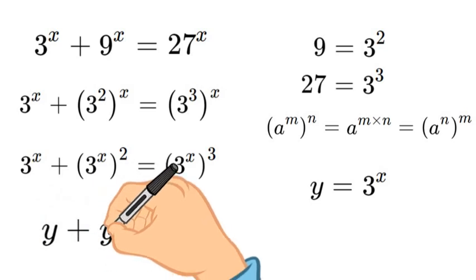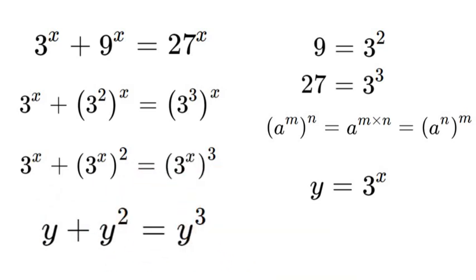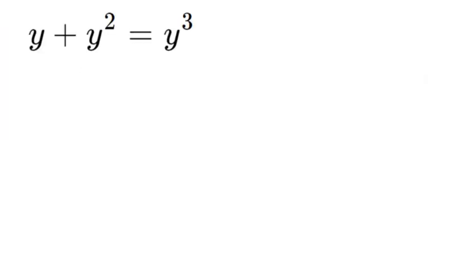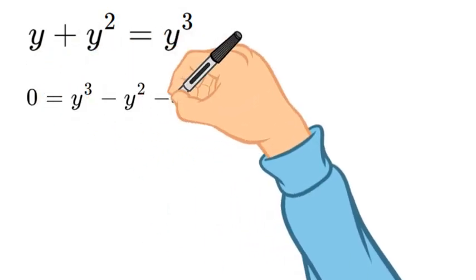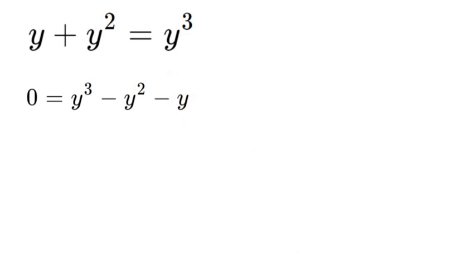So let's rewrite that. Now let's go ahead and solve. We're going to set this equal to 0, so we're going to subtract y squared and y and move it to the other side.